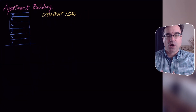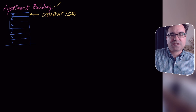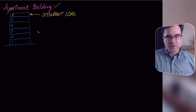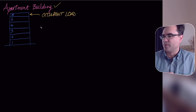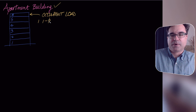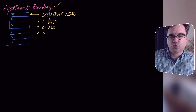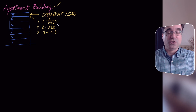For this example we'll do it in a handwritten format. What we're going to do, as I'm showing on the screen, is determine the occupant load for an apartment building — specifically the sixth story. The sixth story contains one one-bedroom apartment, four two-bedroom apartments, and two three-bedroom apartments. We want to find the occupant load for that sixth story.